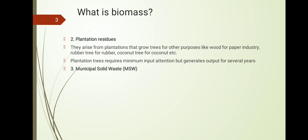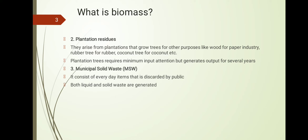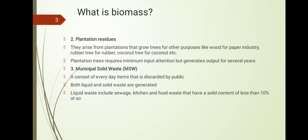The third category becomes relevant when moving to cities or metros, where there will be no agriculture residue and no plantation residue. Instead, we have municipal solid waste, mostly denoted as MSW. MSW consists of every day-to-day item discarded by the public. It can be in liquid or solid form. Liquid waste mainly comes from kitchen waste and food waste from hotels, with solid content of less than 10% — the remaining is in liquid state.